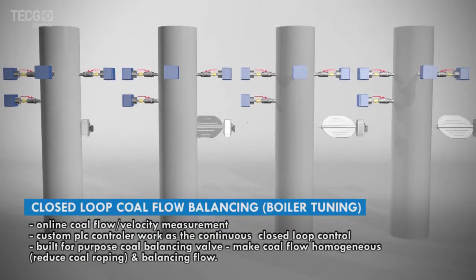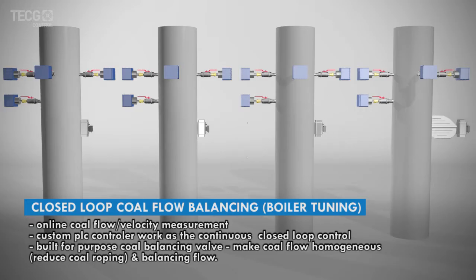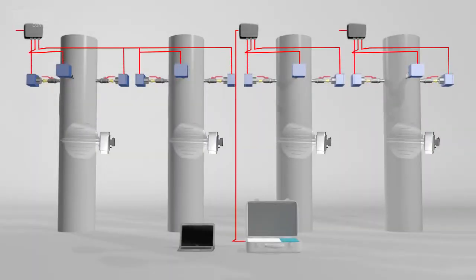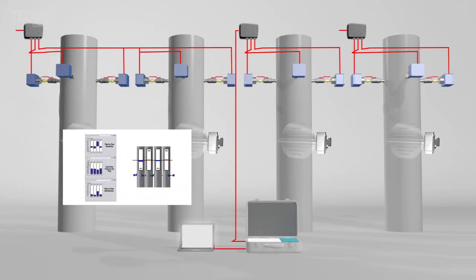Together with this data, we can optimize the coal flow by online tuning. This further allows users to do the tuning via existing means or upgrade to a closed-loop controller with a flow balancing valve.